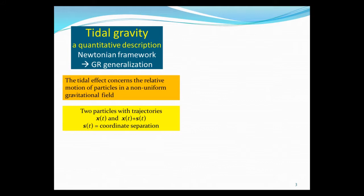So two particles with trajectories, one is x(t) and the other one is x(t) + s(t). So s(t) is the separation between two particles. Okay, this is assumed to be small. So two particles, so the two equations of motion, for the first particle I have the acceleration equal to minus the gradient of the gravitational potential.